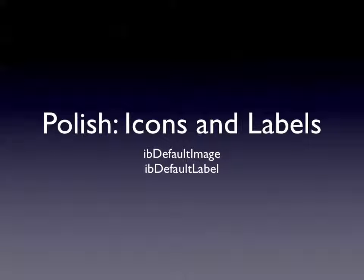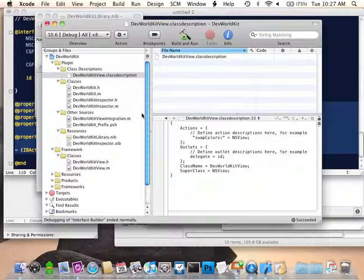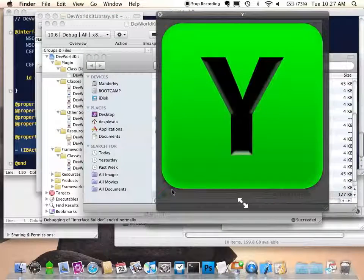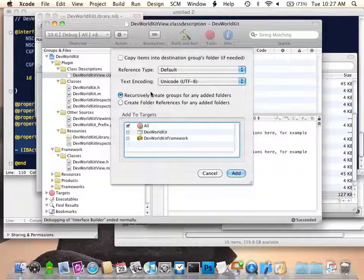For more polish, we can add some default icons and labels. Right now, if I drag and drop this view anywhere else in the document as a top-level object in the nib, it will just be a plain view icon. If we want to customize that and make it look more professional, we can set an image that appears in the document view and also set a default label. I've made an icon here, and I'm going to use it as a representative icon for a control. I just drag and drop it in, copy it into the folder, and add it to all targets.